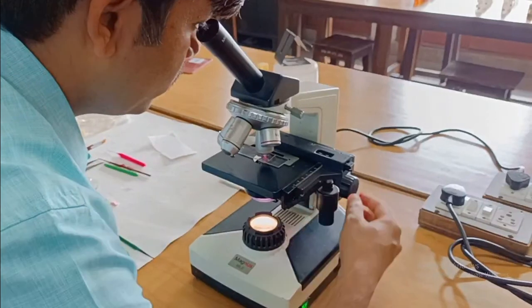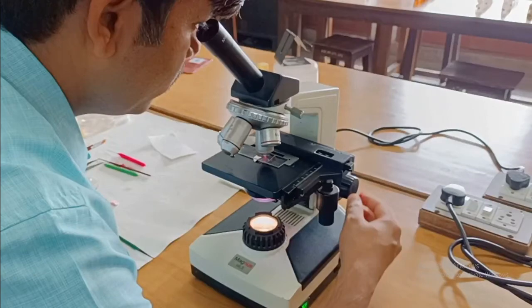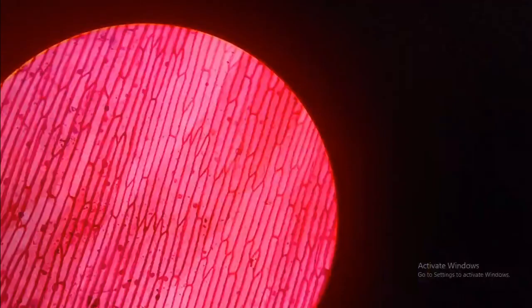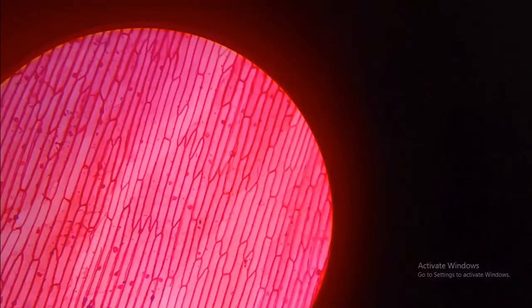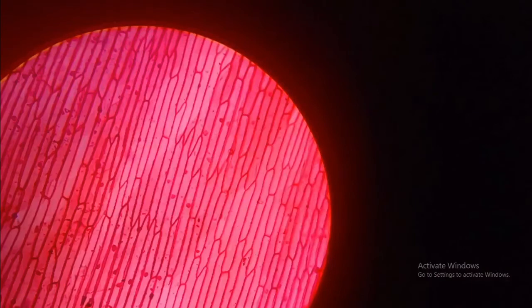For a better view, we have to shift our slide in left-right or up-down condition, so that we can reveal a much better area where cells are clearly visible. As you can see, this is the area where cells are clearly visible. As well as, we can also see some nuclei are also there.